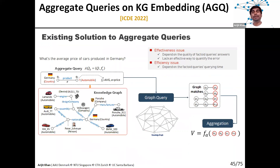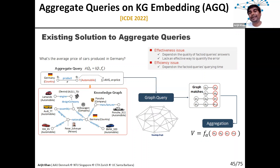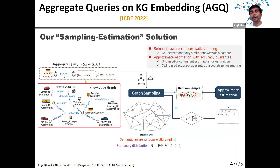One classical approach would be to find all answers and then apply the aggregate, but this does not work well for two reasons: the effectiveness issue (in knowledge graphs, finding all answers is challenging if you don't consider all possible ways things are connected) and the efficiency issue (finding all answers is time-consuming, and then applying an aggregate on top is also time-consuming). Instead, we propose a sampling-estimation approach: rather than finding all relevant answers, we sample a few and estimate the aggregate result. We also give the user an error bound — if the user is happy, we can stop; if not, we do more sampling and incrementally improve the quality and error bound.